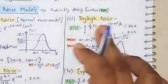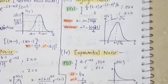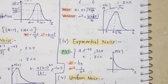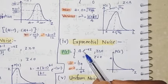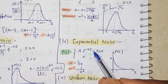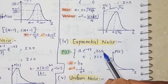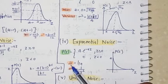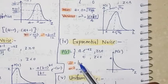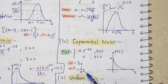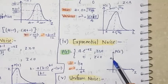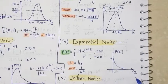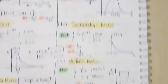The fourth noise model is the Exponential noise model. p(z) = a · e^(−az) when z ≥ 0, and 0 when z < 0. The mean value is 1/a and the variance σ² = 1/a². The diagram shows a decaying curve starting from a on the p(z) axis, decreasing along z.